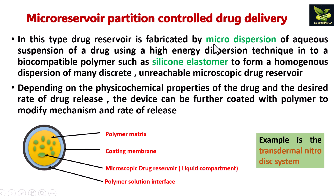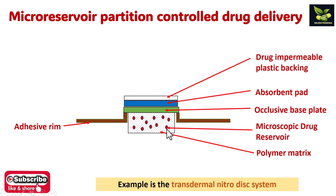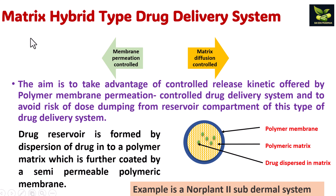Next is micro reservoir partition controlled drug delivery. The drug reservoir is fabricated by micro-dispersion of an aqueous suspension of a drug using a high energy dispersion technique into a biocompatible polymer like silicone elastomer, forming a homogeneous dispersion of many discrete microscopic drug reservoirs. You can see in the diagram the polymer matrix, coating membrane, microscopic drug reservoir as liquid compartments, and polymer solution interfaces. Depending on the physicochemical properties of the drug and desired release rate, the device can be further coated with polymer to modify the mechanism and rate of release. An example is the transdermal Nitrodisc system.